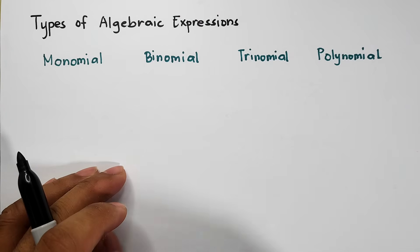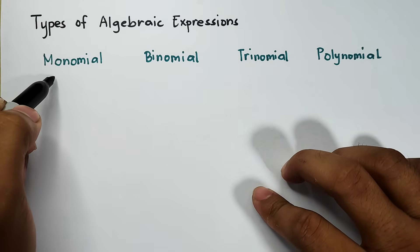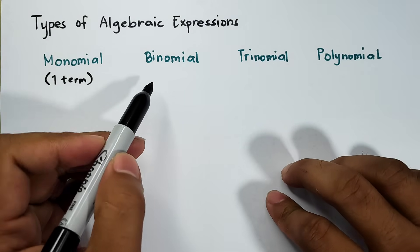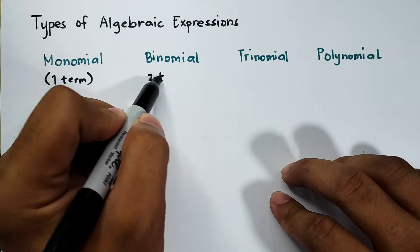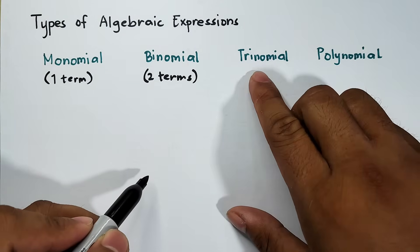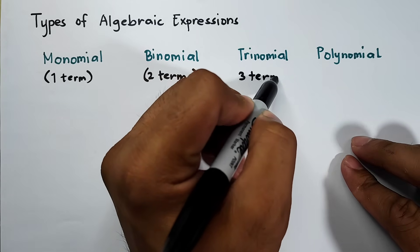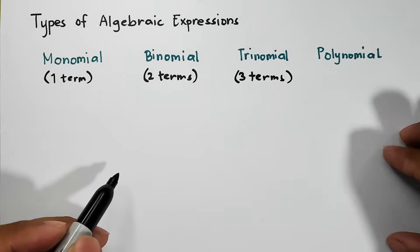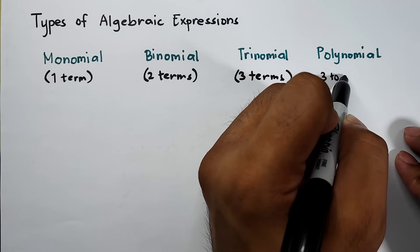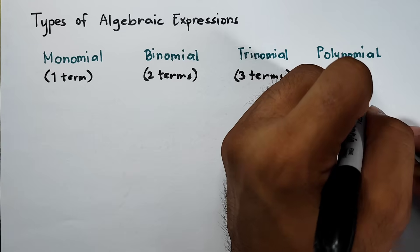For the monomial, we have one term. For the binomial, we have two terms. For the trinomial, we have three terms. And for the polynomial, we have four terms or more.